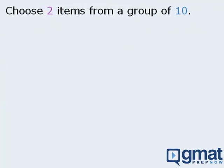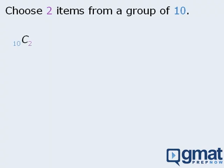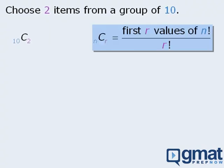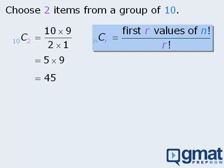Let's say we want to find the number of ways to select two items from a group of ten items. If the order of the selected items does not matter, then we can accomplish this in ten choose two ways. To quickly evaluate ten choose two, we'll apply this shortcut: the numerator will be the first two values of ten factorial and the denominator will be two factorial. We can speed up our calculations by recognizing that ten divided by two times one simplifies to five, and five times nine equals forty-five. So ten choose two equals forty-five.